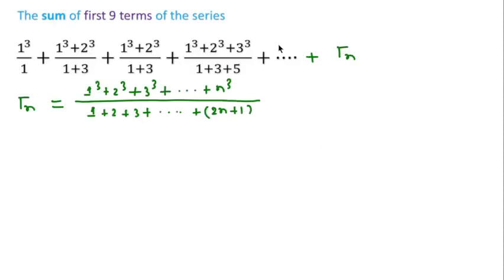n(n+1)/2 whole squared. And over this is an AP with first term 1, so we can write n/2 times (2×1 + (n-1)×2), where the common difference d is 2.